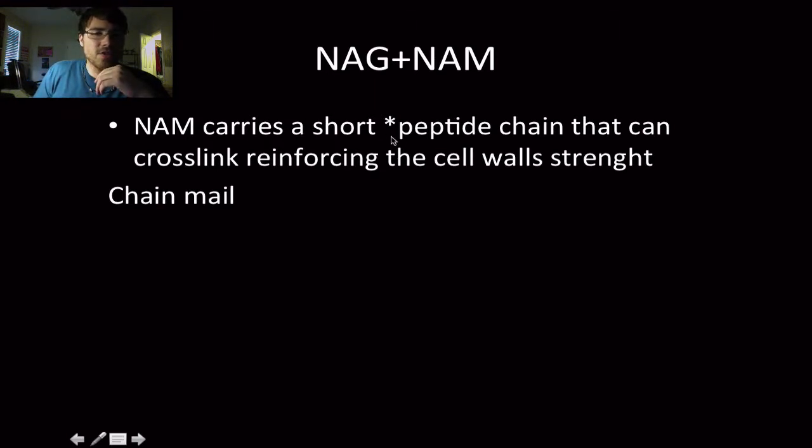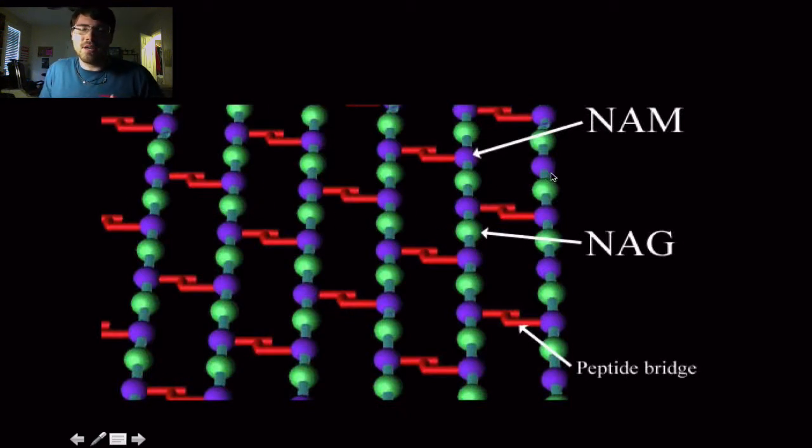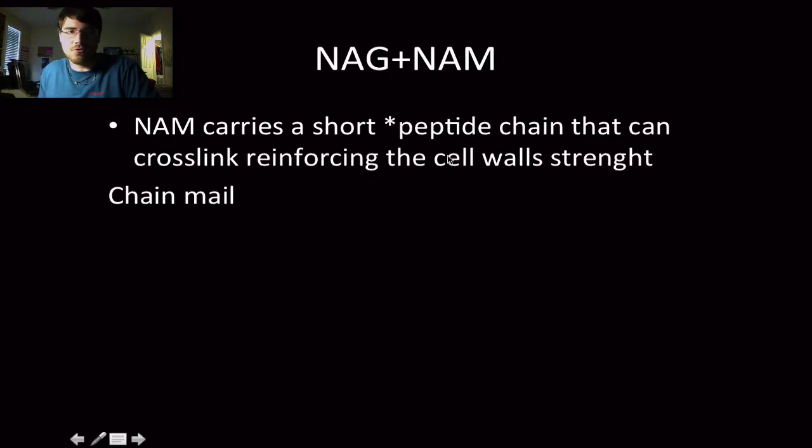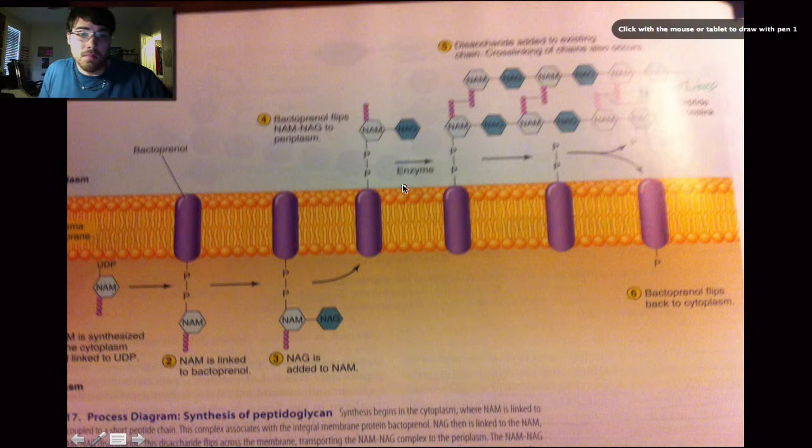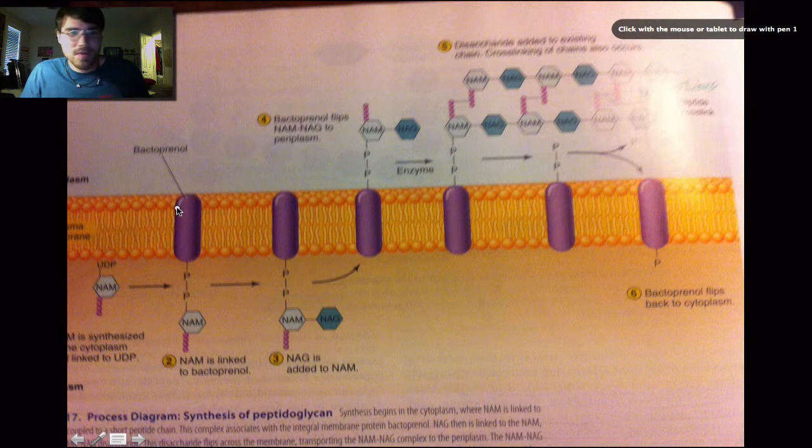NAM carries a short peptide chain that can crosslink, reinforcing the cell wall's strength. If you know anything about medieval armors, you have your plate mail on top and underneath it you have chain mail. That's kind of how it works. Here's your plate mail, this is really strong, and then there's this chain mail that will bend a lot before it starts to break. This is what really provides a lot of structural support. A molecule or an integral membrane by the name of bacteroprenol flips the intracellular NAG and NAM linkage. In the periplasm, transpeptidase catalyzes the peptide crosslinks.